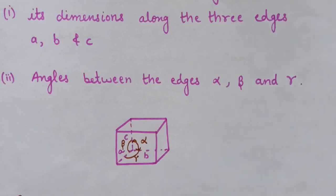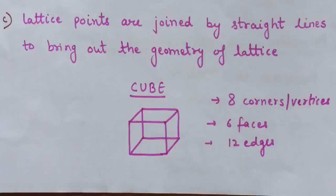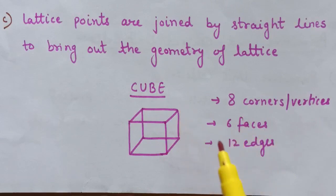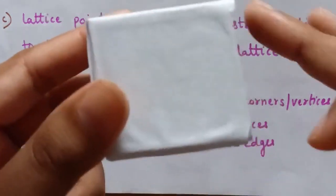First, I will explain some basic information about a cube, and after that we will move to the next topic: primitive and centered unit cells. In a cube, there are eight corners or vertices, six faces, and twelve edges.